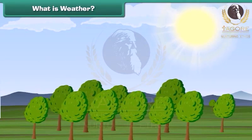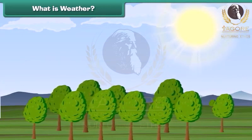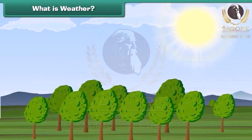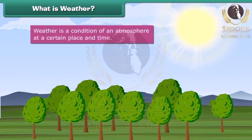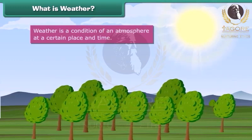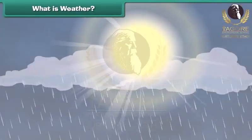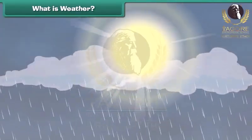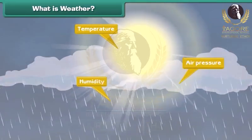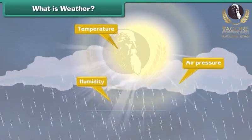Did you check today's weather forecast? What is weather? Basically, weather is a condition of an atmosphere at a certain place and time. The weather depends on many factors such as temperature, humidity and air pressure. Come, let us learn about these factors.